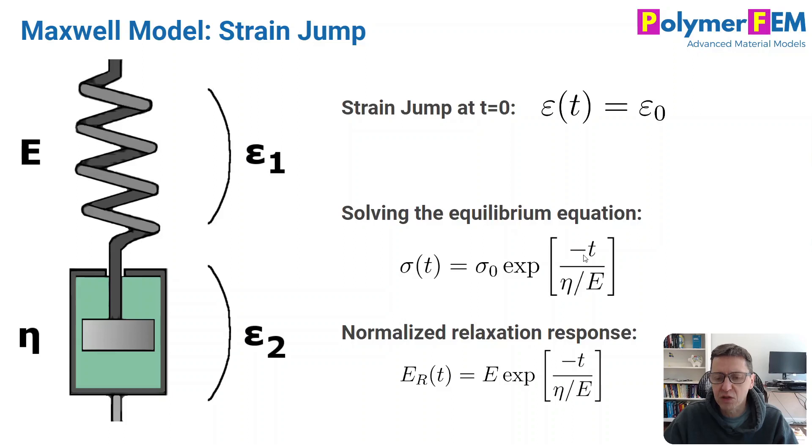And what I do get when you do that is the equation here in the middle. So it's an exponentially decaying stress. And what we do then is we normalize the stress by the jump in strain and we get a modulus. So this is the relaxation modulus for a Maxwell element of this kind.